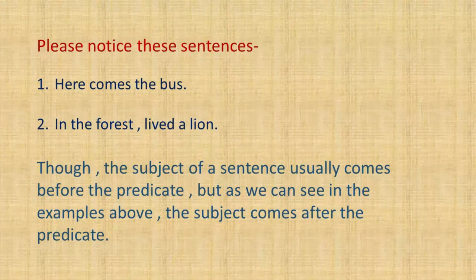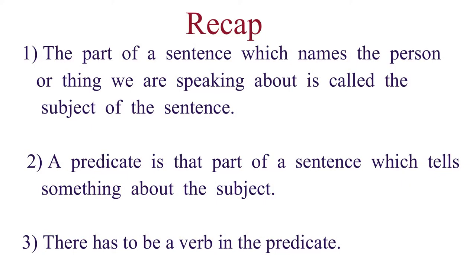So, we can say that it is usually the subject which comes first and then the predicate, but sometimes the subject can come after the predicate. Let us see what we learnt in this module. We learnt that the part of a sentence which names the person or thing we are speaking about is called the subject. A predicate is that part of a sentence which tells something about the subject. There has to be a verb in the predicate. In the next module, we shall deal with the types of sentences.